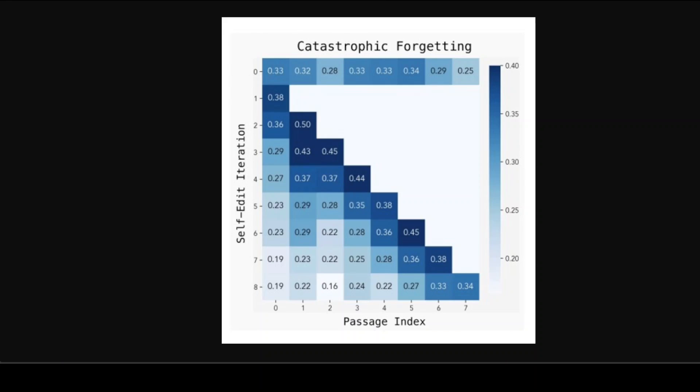Of course, this approach has its limitations. The biggest one is catastrophic forgetting - as the model learns new information, it tends to forget previously learned facts. The authors tested this by sequentially adapting to multiple passages and tracking performance on earlier tasks. As you can see in these results, performance on earlier passages gradually decreases as more adaptations are applied. This is a classic problem in continual learning that SEAL doesn't fully solve yet.